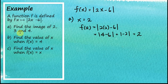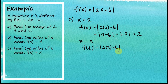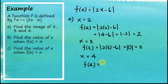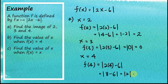When x equals 3, f(3) = |2 × 3 − 6| = |6 − 6| = |0| = 0. When x equals 4, f(4) = |2 × 4 − 6| = |8 − 6| = |2| = 2. So the images of the function for objects 2, 3, and 4 are 2, 0, and 2 respectively.